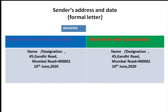First we will discuss the sender's address and date of formal letters. The sender's address can be written in two ways: indented form with punctuation, or block form with punctuation. In the indented form, we include the name or designation, then the address — the place from where the sender is writing — then the date. When writing the indented form, we have to give some space after each step.